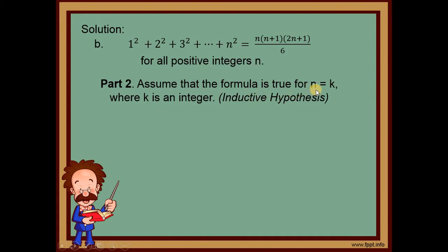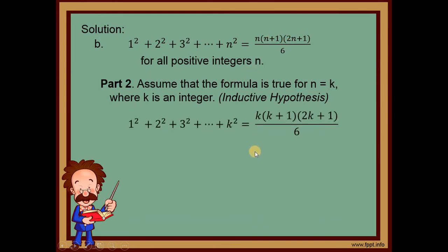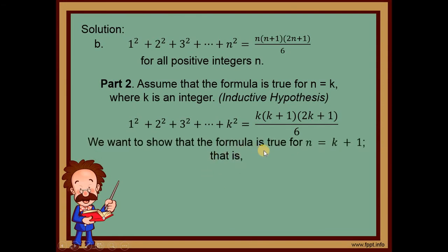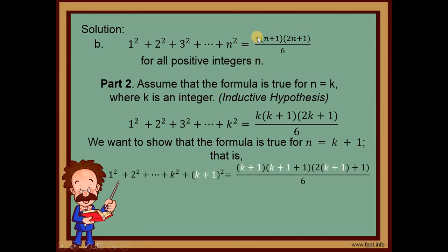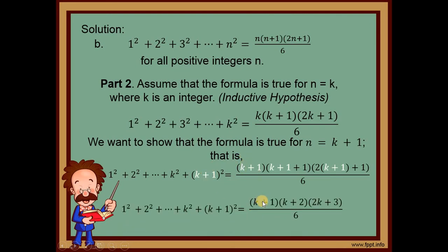Part 2: Assume the formula is true for n = k — the inductive hypothesis. Replace all n with k: 1² + 2² + ... + k² = k(k+1)(2k+1)/6. We want to show it is true for n = k+1, so replace all n with k+1: the right side becomes (k+1)(k+2)(2k+3)/6. We also add the next term (k+1)² to the left side.